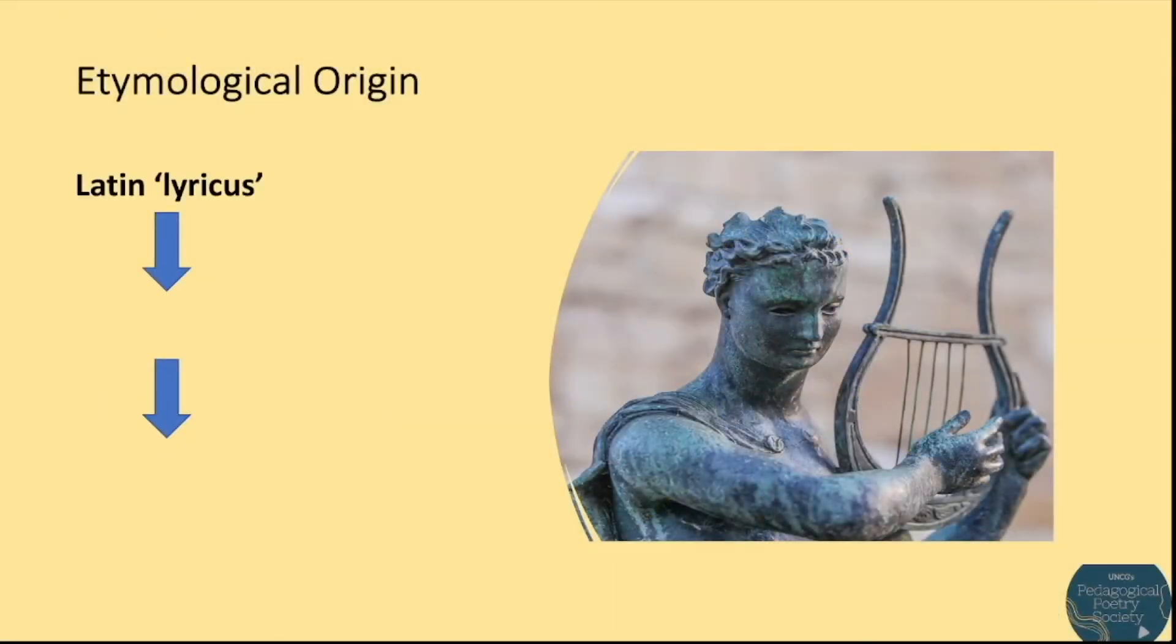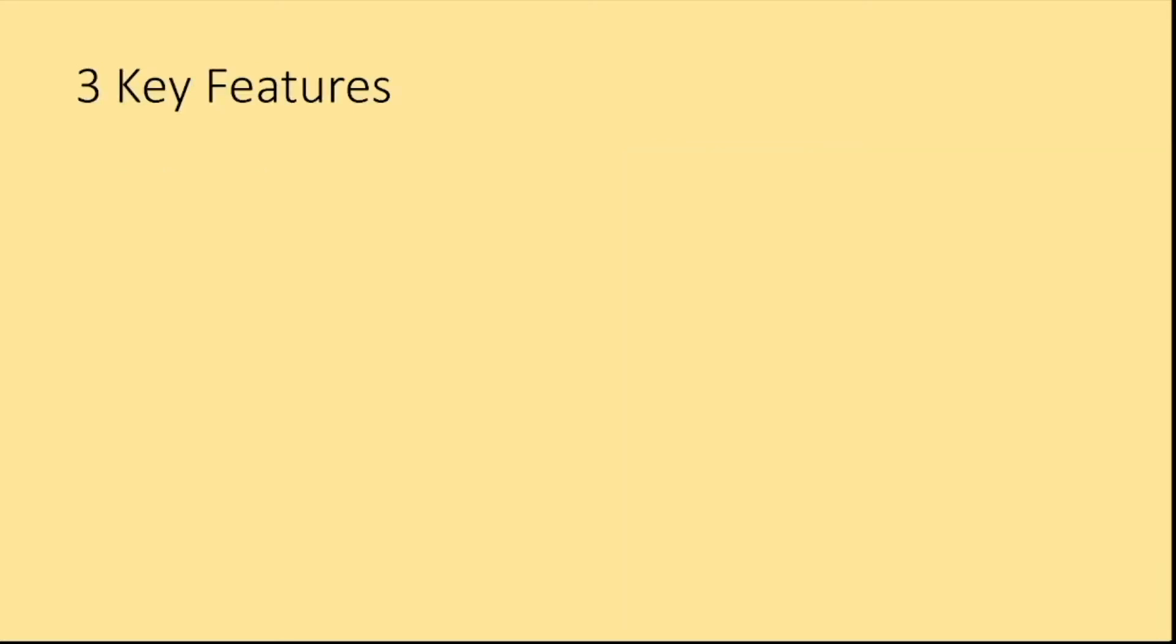The word lyric has been derived from the Latin Lyricus and the Greek Lyrikos, which means singing to the lyre. The Greeks defined a lyric as a song to be sung to the accompaniment of a lyre, a musical instrument that you can see on the screen. The instrument was used to accompany the singing of poetry during different festivals. But here, I am going to discuss three key features of a lyric poem.